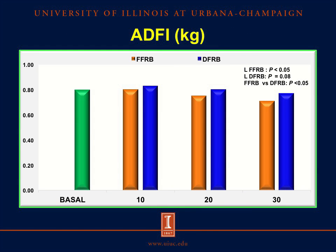Now let's move on to the effect of ingredient and inclusion level. In this graph and in the following slides, the orange bar represents parameters for pigs fed diets containing full fat rice bran, and the blue bar represents parameters for pigs fed diets with defatted rice bran. There was a significant linear effect decreasing feed intake as the inclusion level of full fat rice bran increased, and also a tendency to decrease feed intake as the content of defatted rice bran increased. Also, average daily feed intake was greater in pigs fed diets containing full fat rice bran than in pigs fed diets with defatted rice bran.